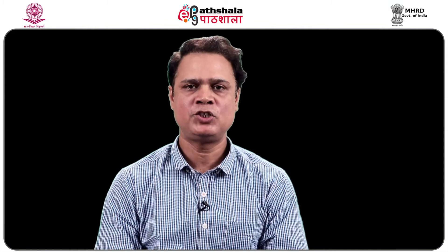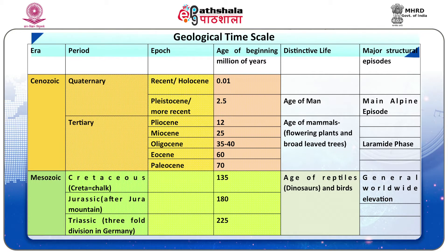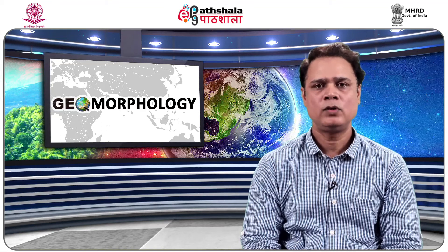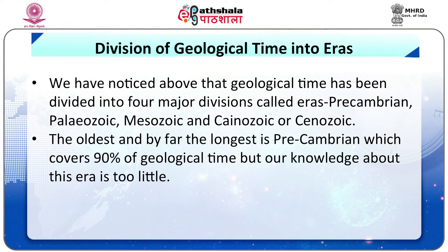Let us now look at the stratigraphic chart which has mentioned four periods. It is clear from the above stratigraphic chart that man is comparatively a newcomer on the earth. Even this history of the earth constitutes not more than one-sixth of the life of the earth. Nothing is known about five-sixth of the earth's history. The geological time has been divided into four major divisions called eras: Precambrian, Paleozoic, Mesozoic and Cenozoic. The oldest and by far the longest is Precambrian, which covers 90% of geological time, but our knowledge about this era is too little.